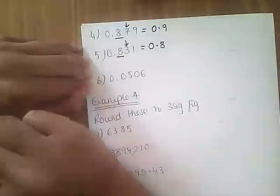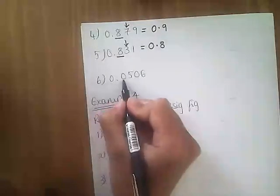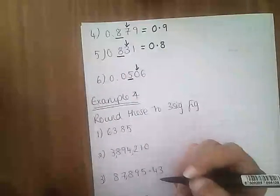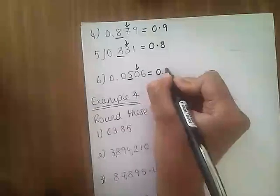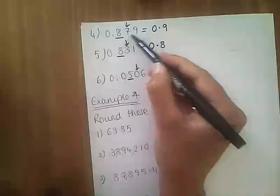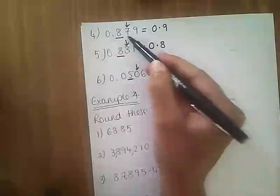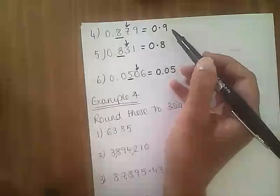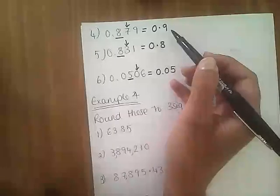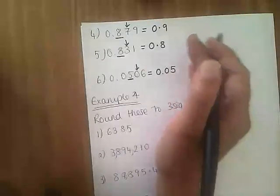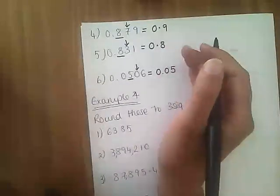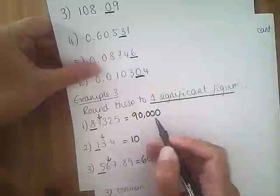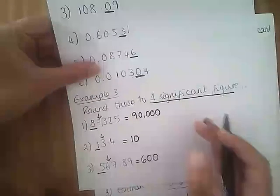Number six: those zeros don't count, because they're not after another number. So my first significant figure is the five. Is the number next door five or more? No. So that is going to be 0.05. We are not replacing those numbers with zeros after the decimal point, because it doesn't change the value of the number — 0.9 is the same as 0.9000... If it asks for one significant figure, it wants one figure. You only replace with zeros where otherwise it would change the value of the number.